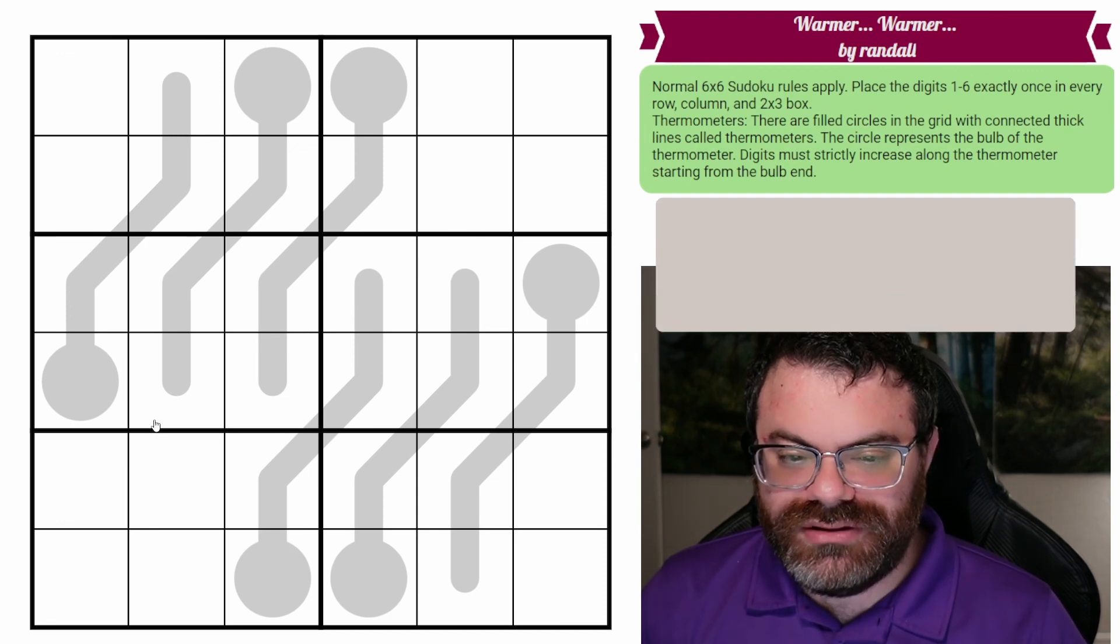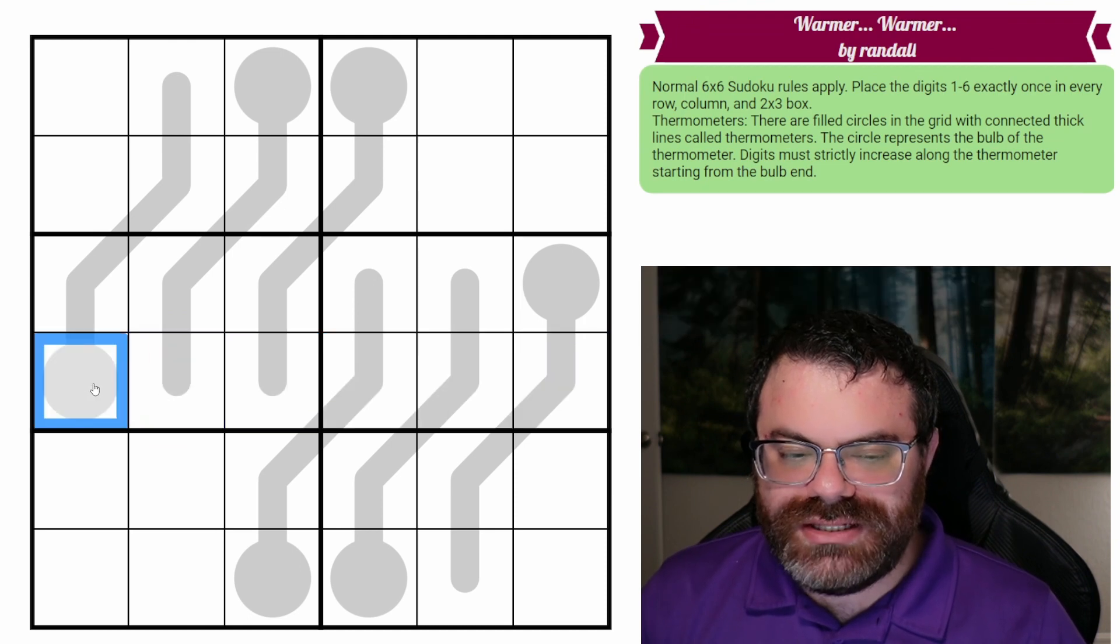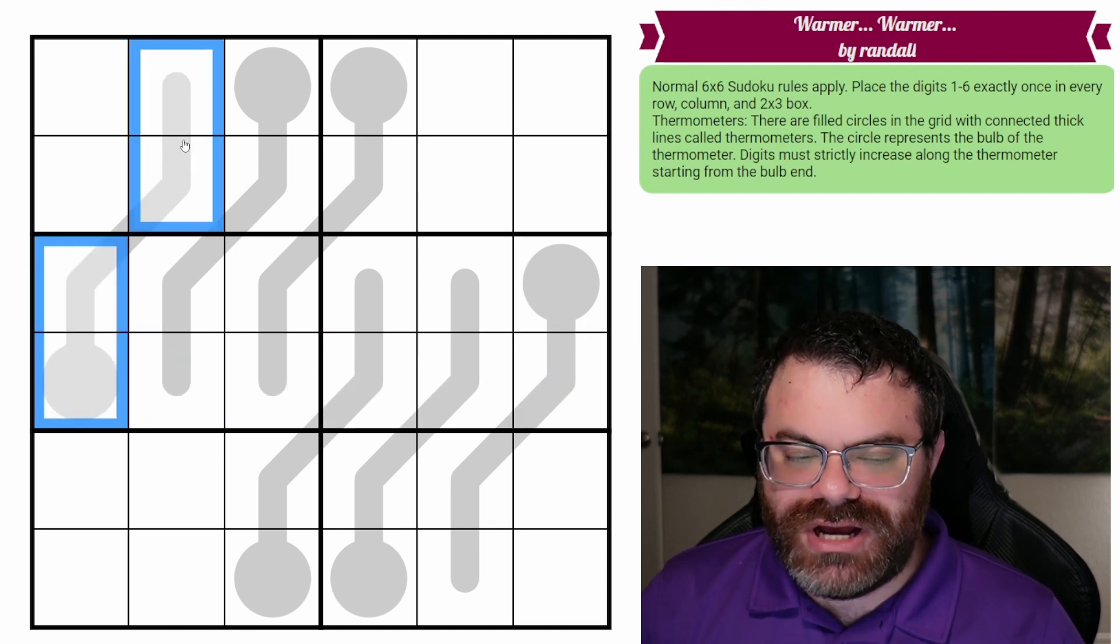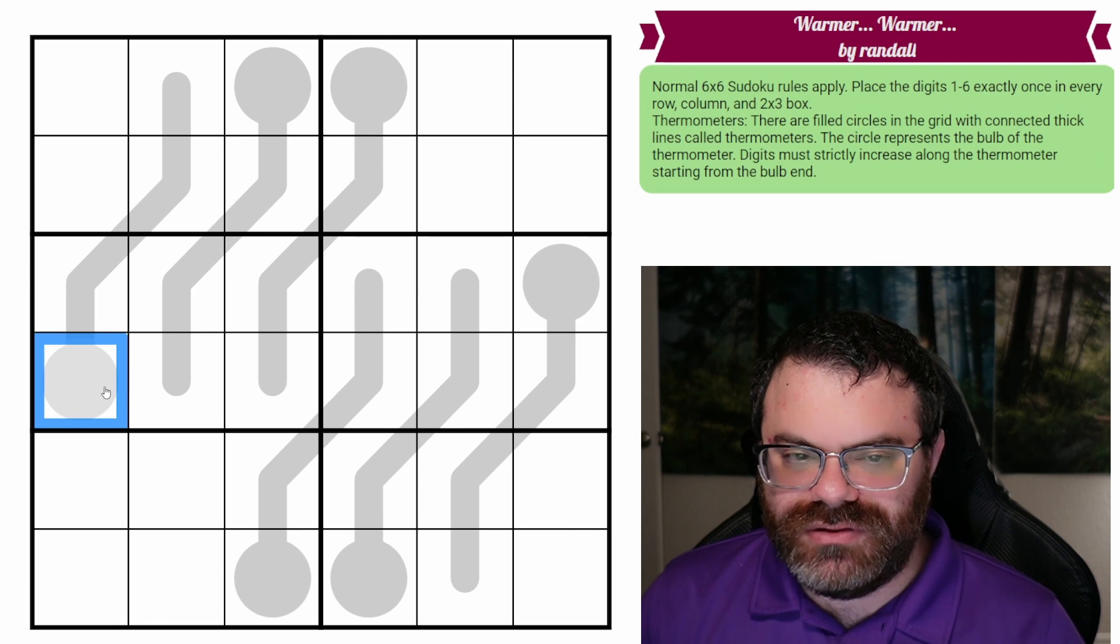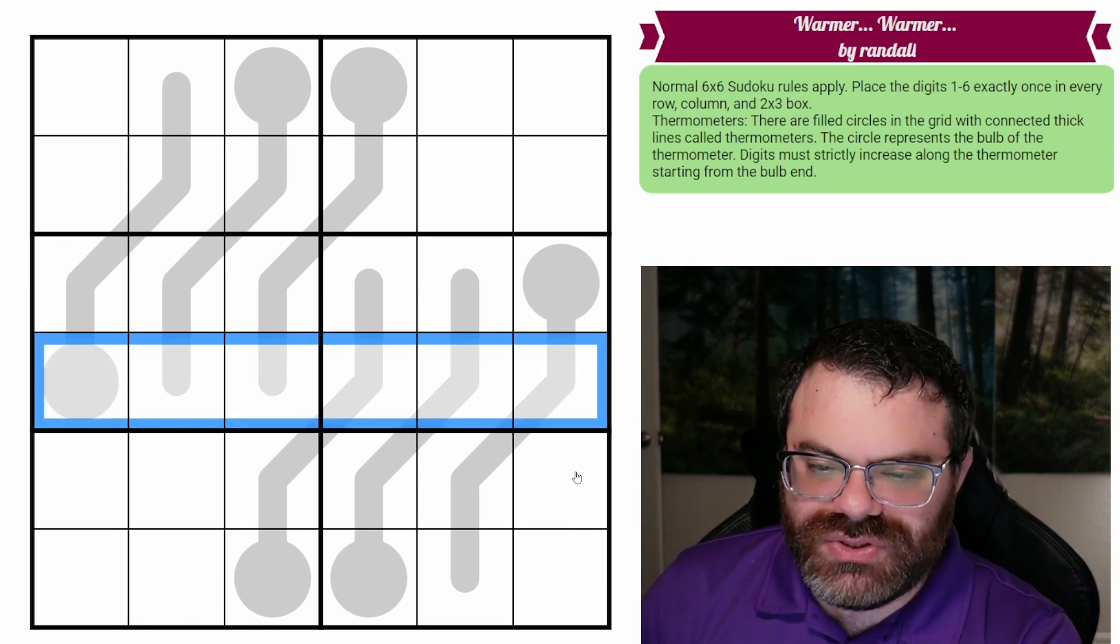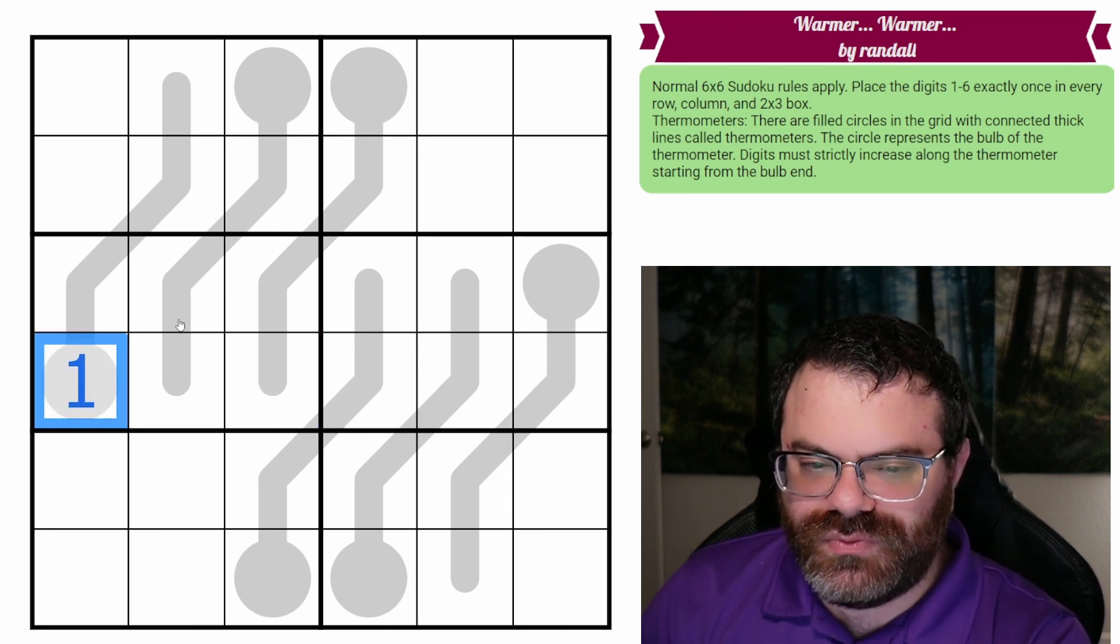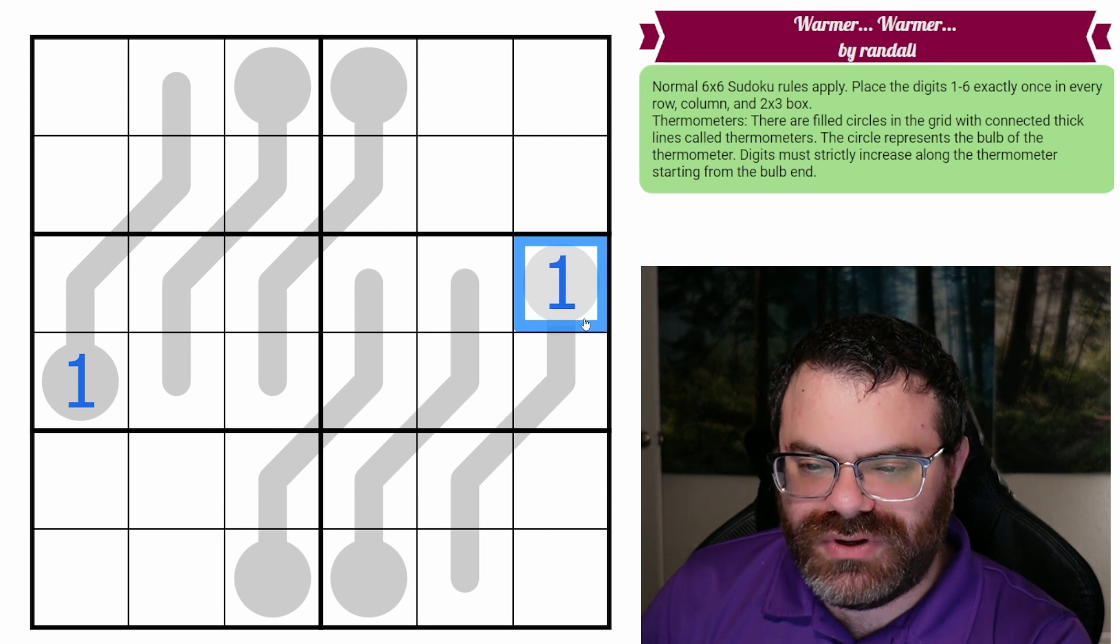Well, I think a pretty clear place to get started if you're used to thermometers is you know that ones can only go, when talking about thermometer cells, ones can only go in bulbs and sixes can only go in tips. So this row needs a one, and these are all filled by non thermo bulbs, except for one of them. So that's a one. Same with this row. That's the one.